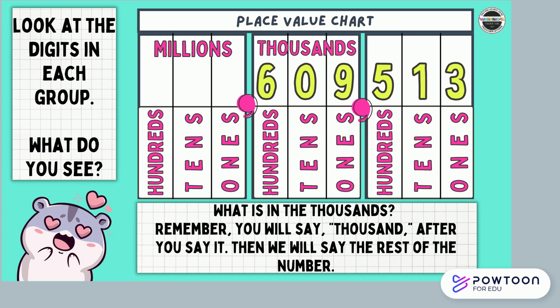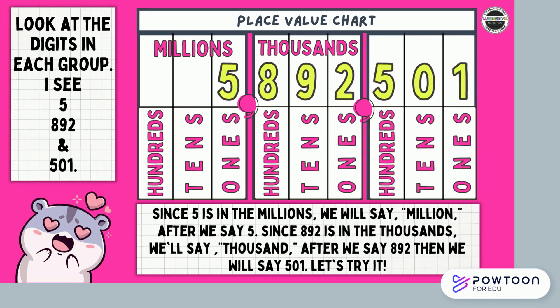Good job. Look at the digits in each group — I see 5, 892, and 501. Since 5 is in the millions, we will say million after we say 5. Since 892 is in the thousands, we will say thousand after we say 892. Then we will say 501. Let's try it: 5,892,501.